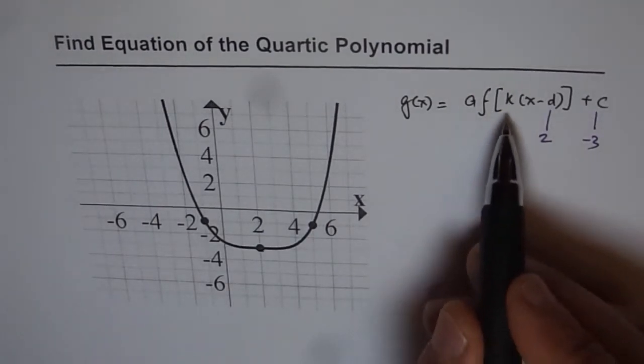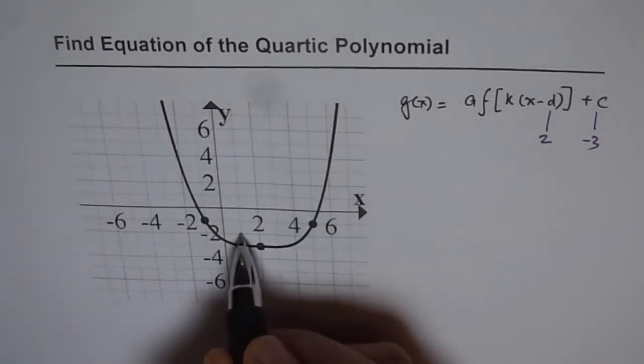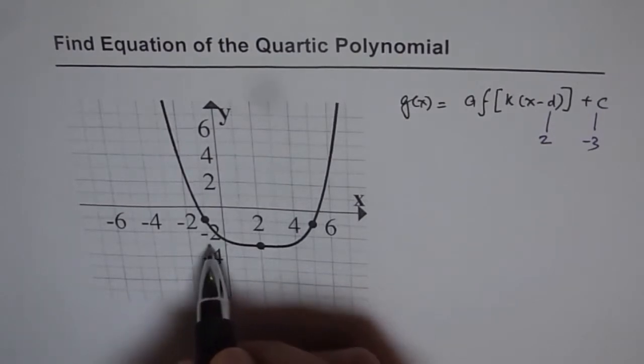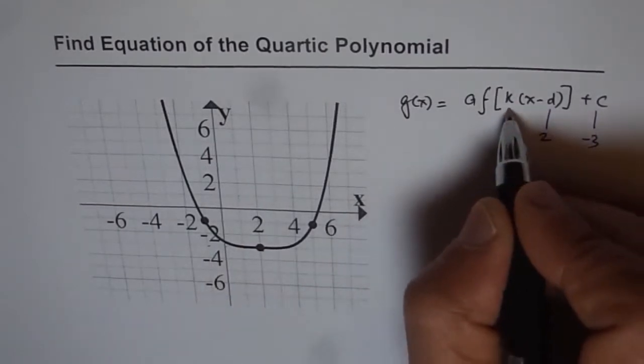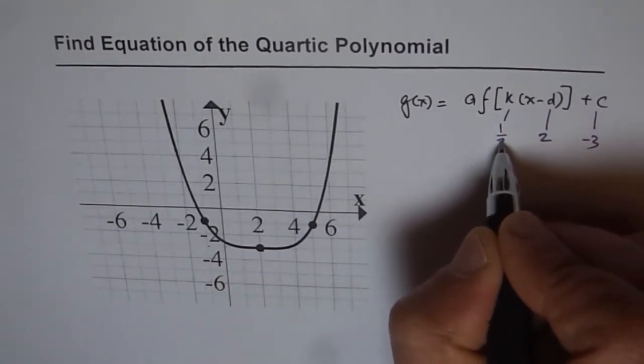Now, k is horizontal stretch or reflection. The point normally used to be at 1, 1. But instead of being at 1, it is 1, 2, 3 units away. So, 3 units away means it has been stretched horizontally by a factor of 3. That means k should be 1 over 3.